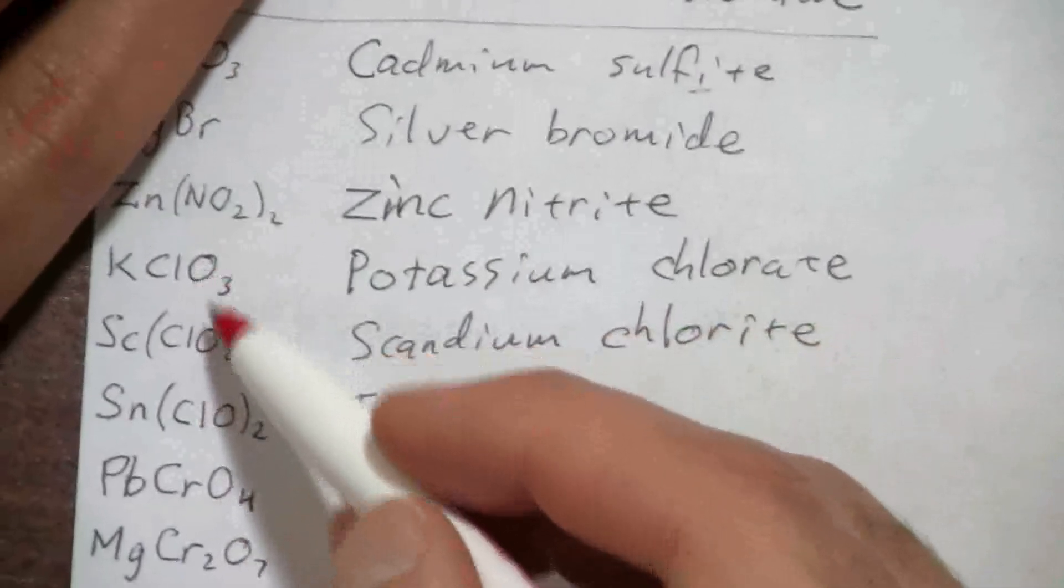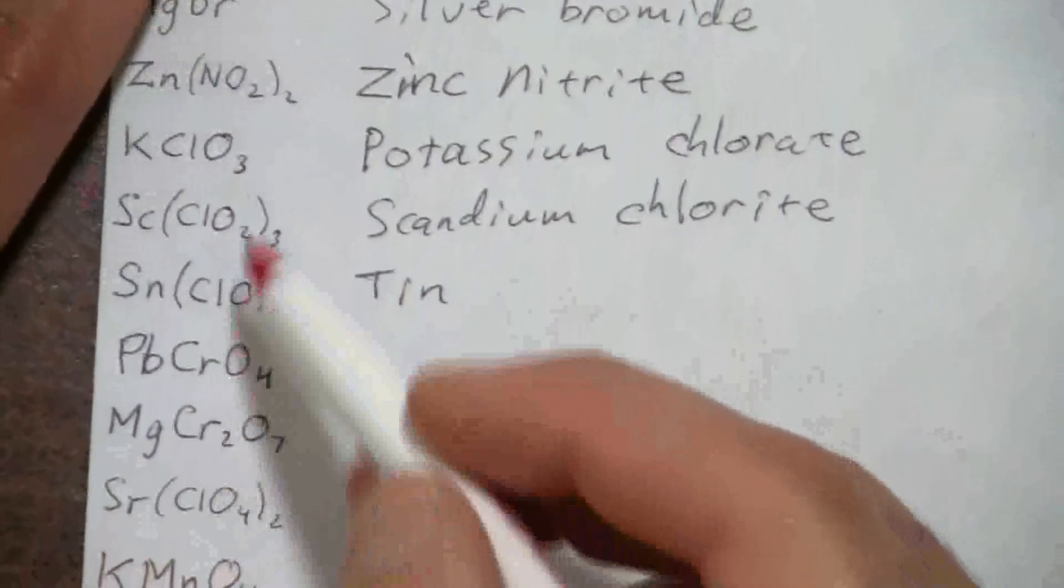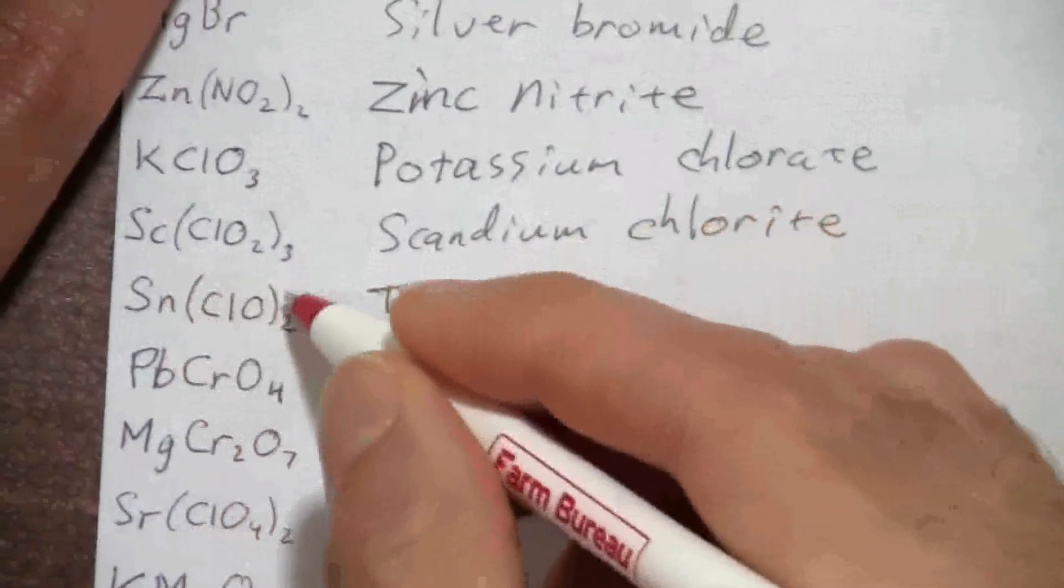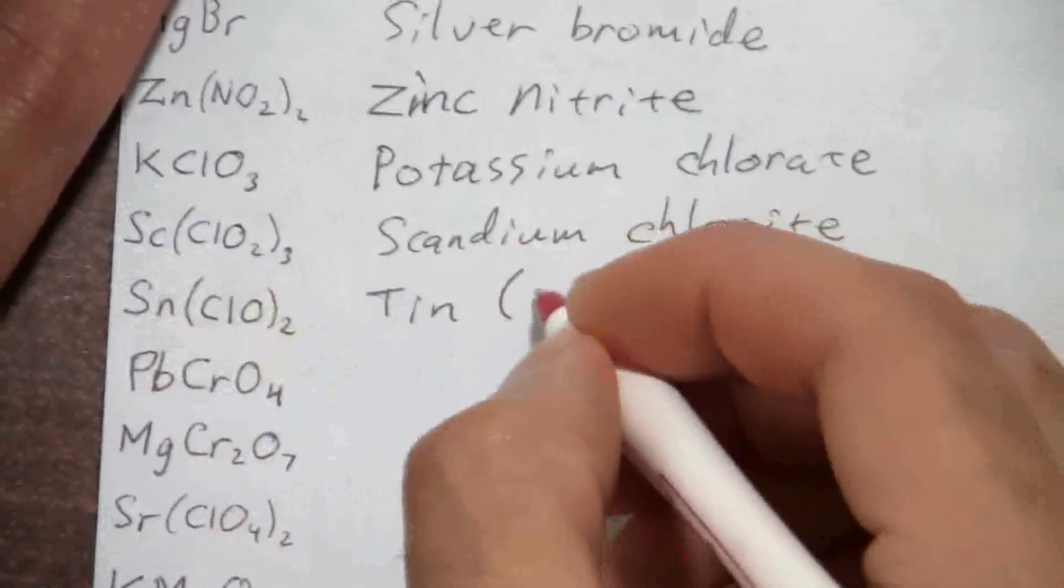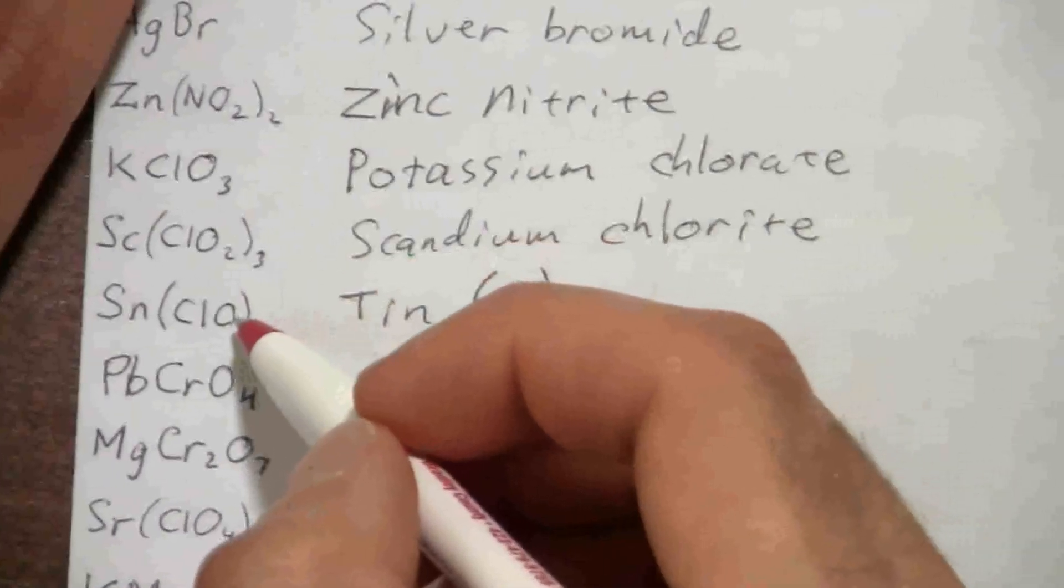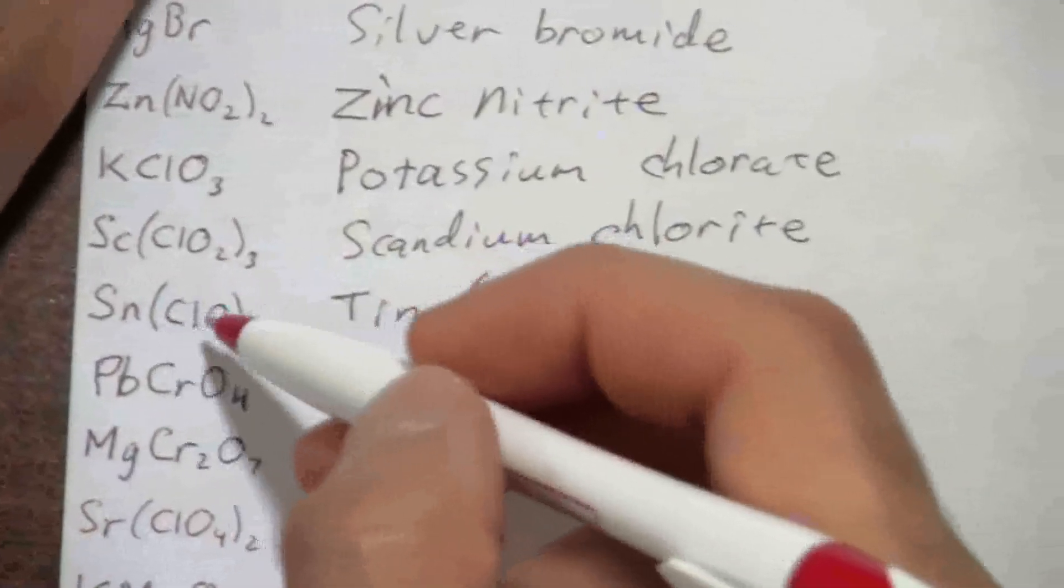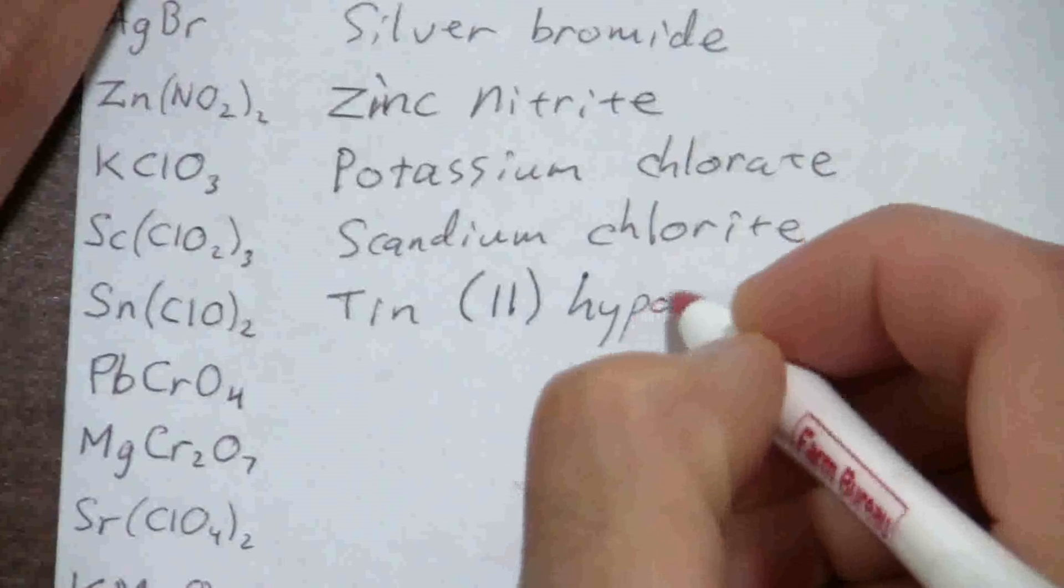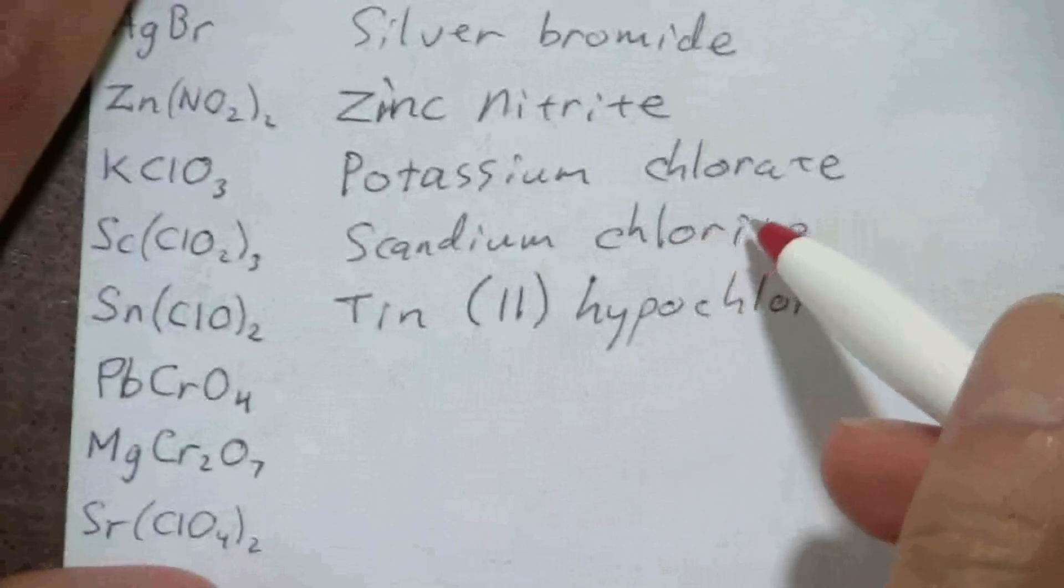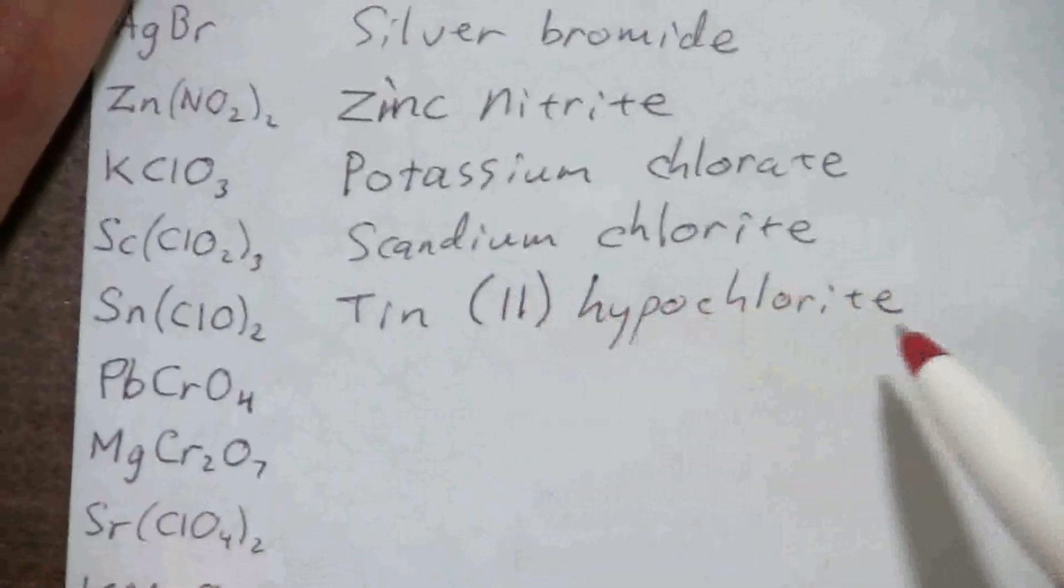And we know all of these chlorine oxygen ions, they all have a negative one charge. So if I have two of those, then this must be a negative two, and the tin would have to be a positive two to balance that out. So this will be tin two, and here's where we change the name. The name of this ClO ion is hypochlorite. So if we want to go one less oxygen atom than the chlorite, we put a hypo prefix in front of it, so it's hypochlorite.